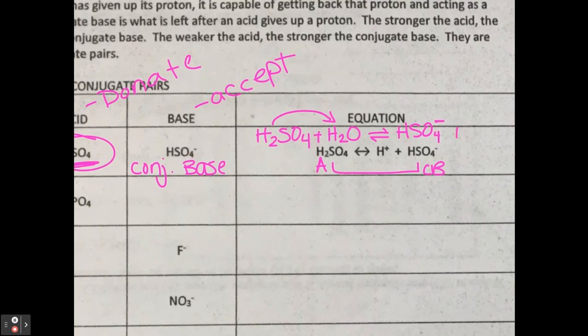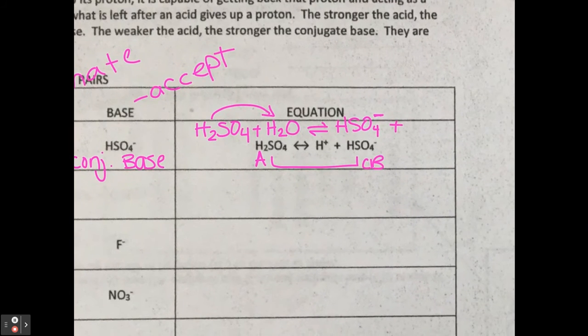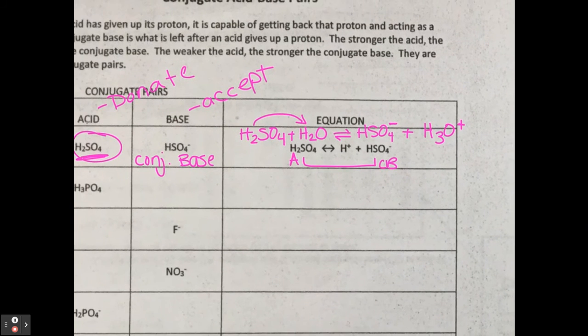So, this is its conjugate base, and then what happened to the H2O? What did it turn into? Hydronium, yep, H3O. Okay? So, that is really what's being shown here, and so then what you can see is that this is the acid, this is its conjugate. What is water acting as?